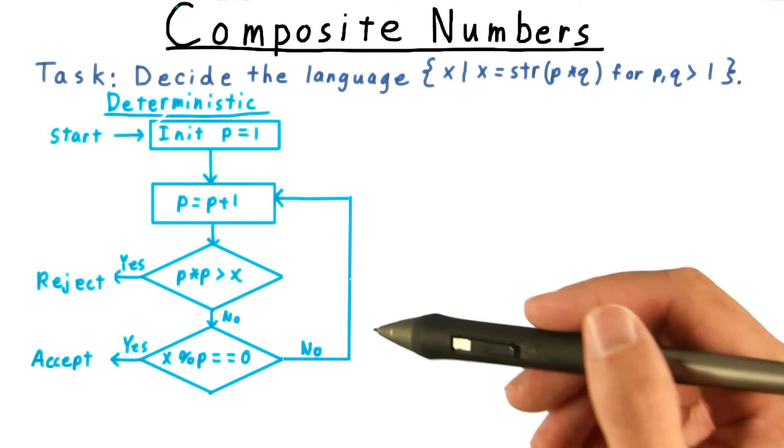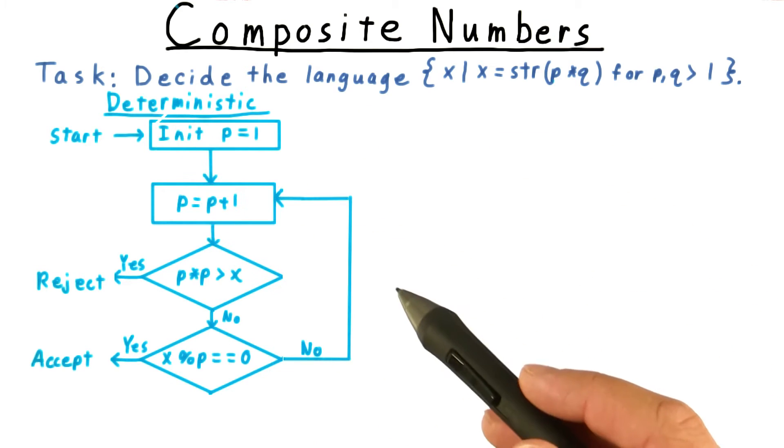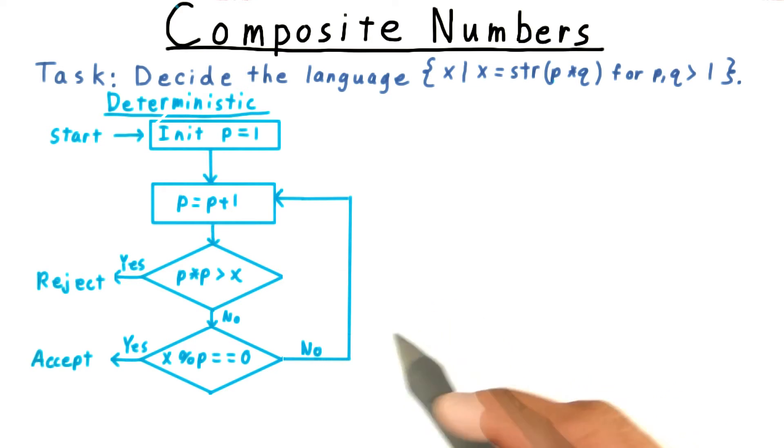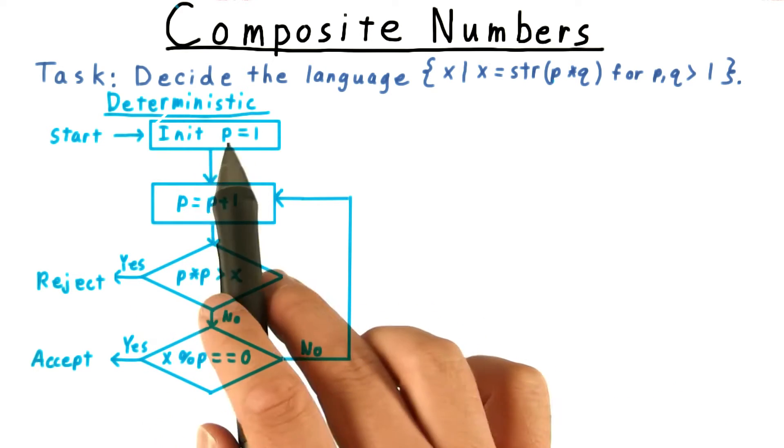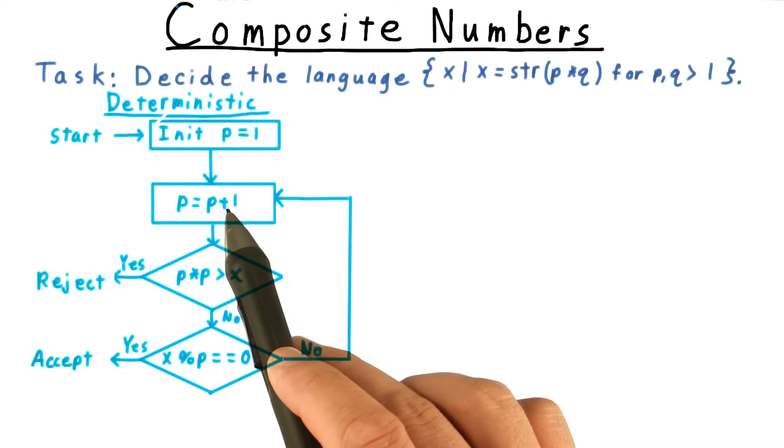One deterministic solution looks like this. Think of the flow diagram as capturing various modules within the deterministic Turing machine. We start by initializing some number p to 1.